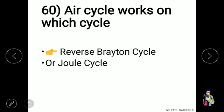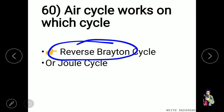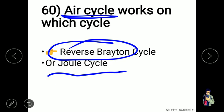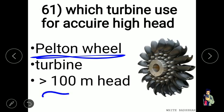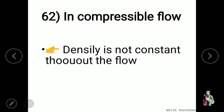The air cycle works on the reverse Brayton cycle, also known as the Joule cycle. The Pelton wheel turbine is used for high head applications — greater than 100 meters.